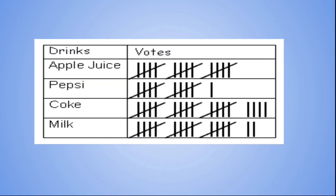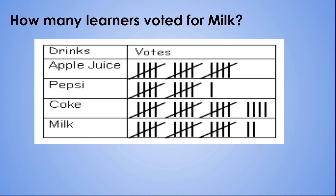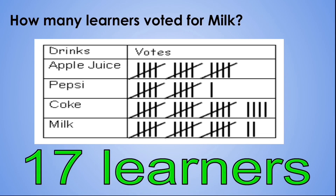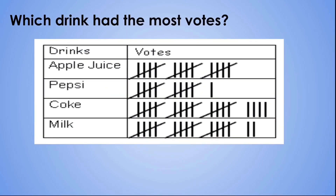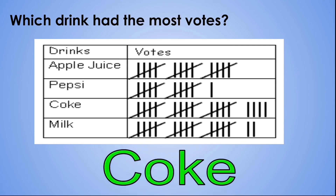Our next question: how many learners voted for milk? Let's count together: 5, 10, 15, 16, 17. 17 learners voted for milk. Our next question: which drink had the most votes? Now let's look at our tally chart — which drink do you think had the most votes? Coke had the most votes.